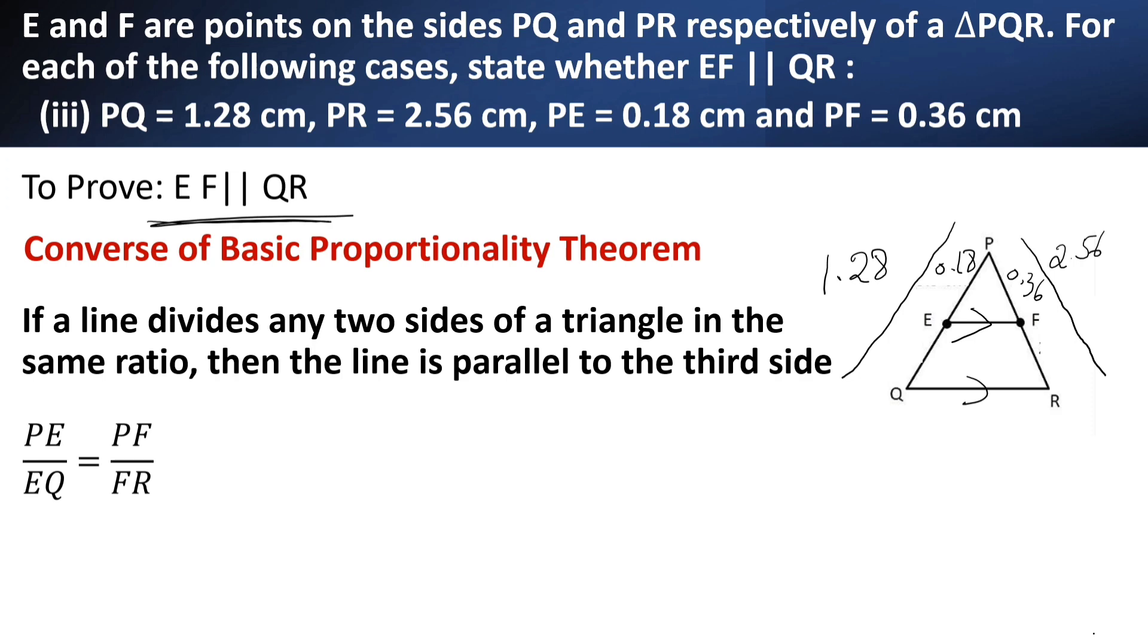So, now let us check PE by EQ is equal to PF by FR. How? We have to find EQ here. 1.28 minus 0.18. What is it? 1.1. Here, 2.56 minus 0.36. What is it? 2.2.